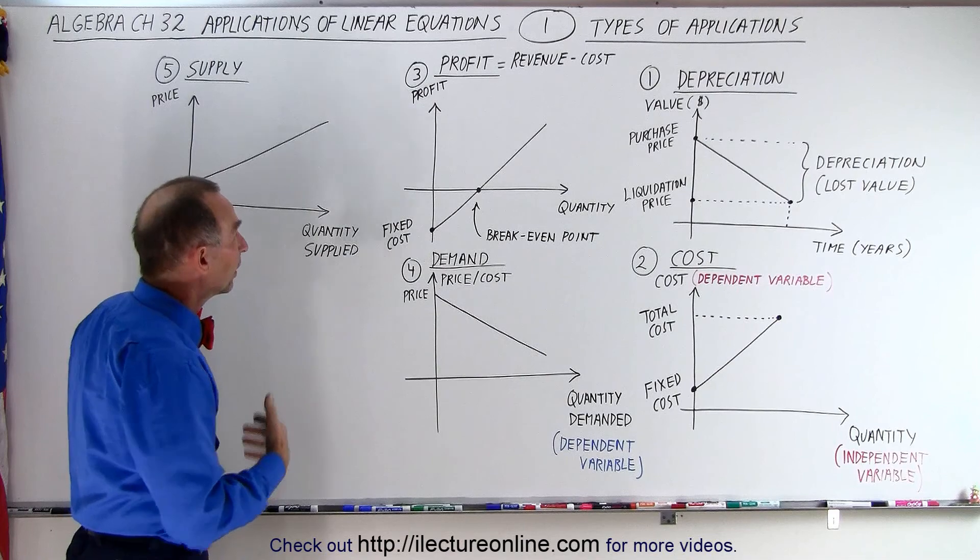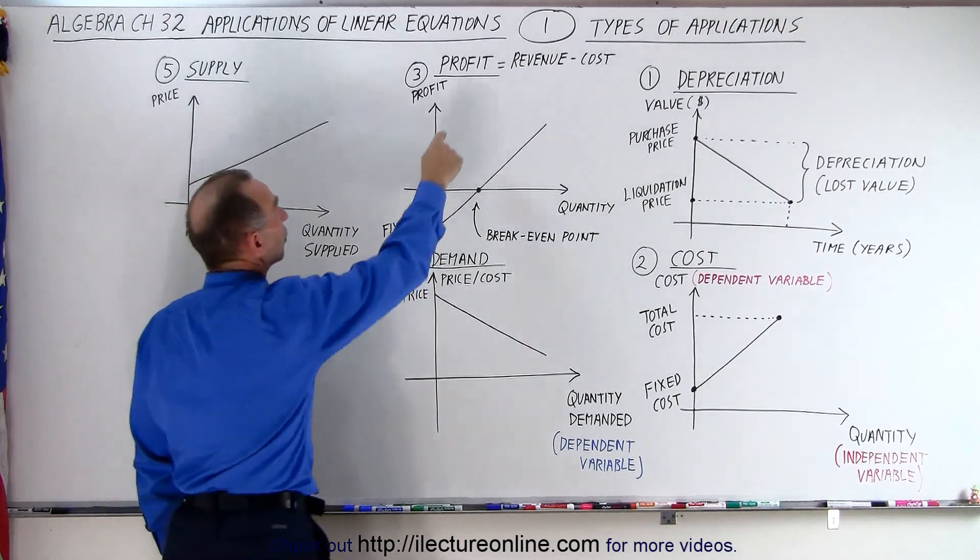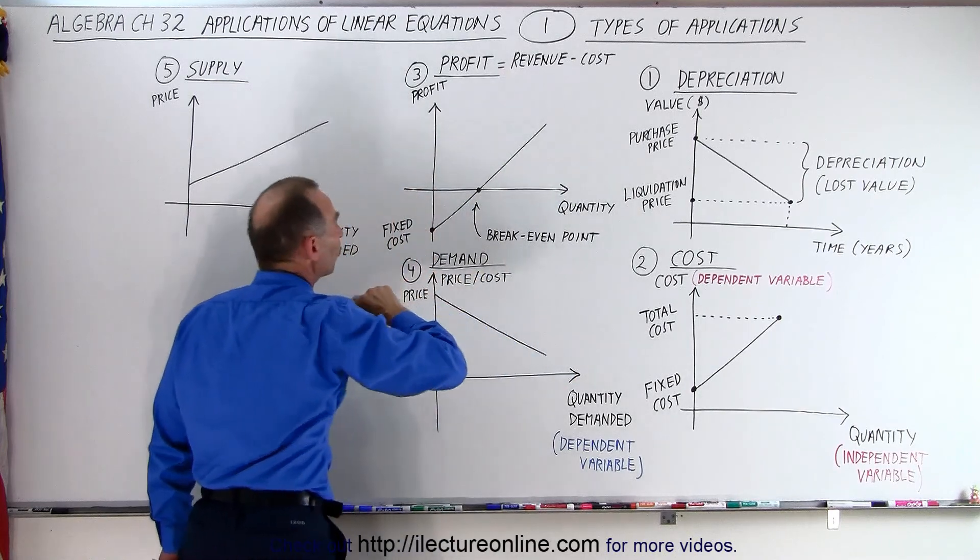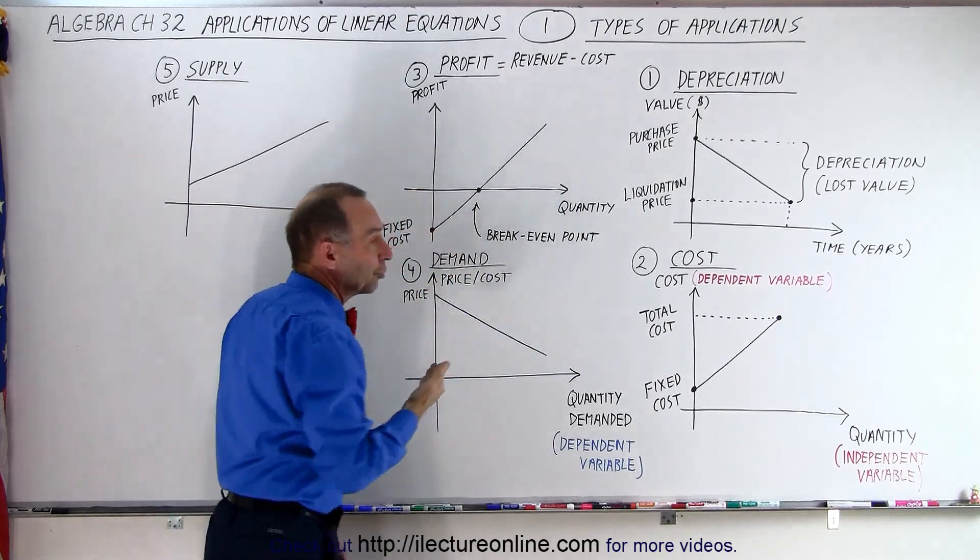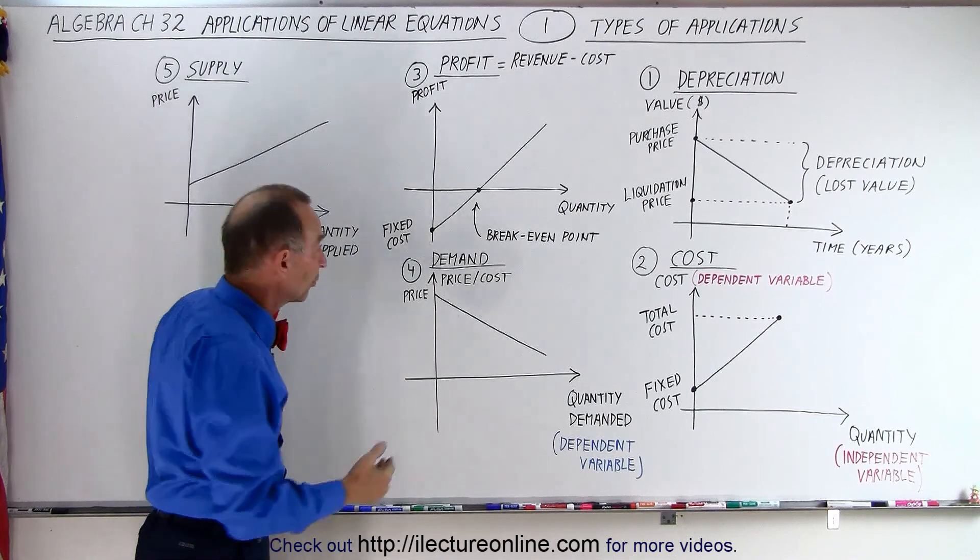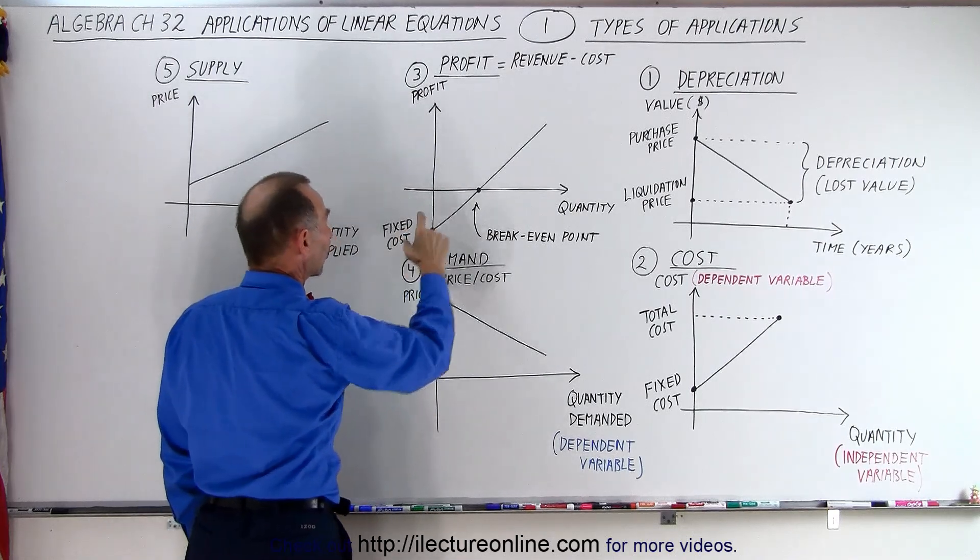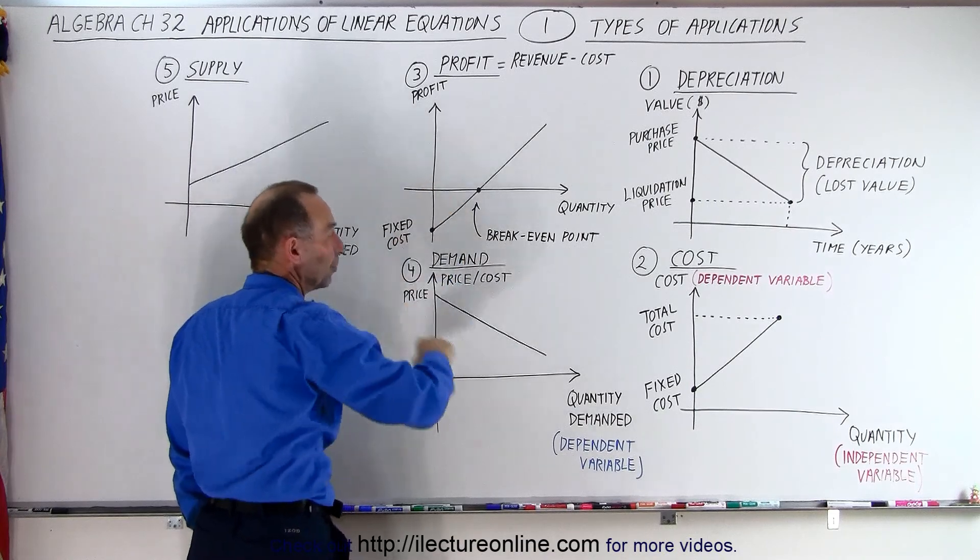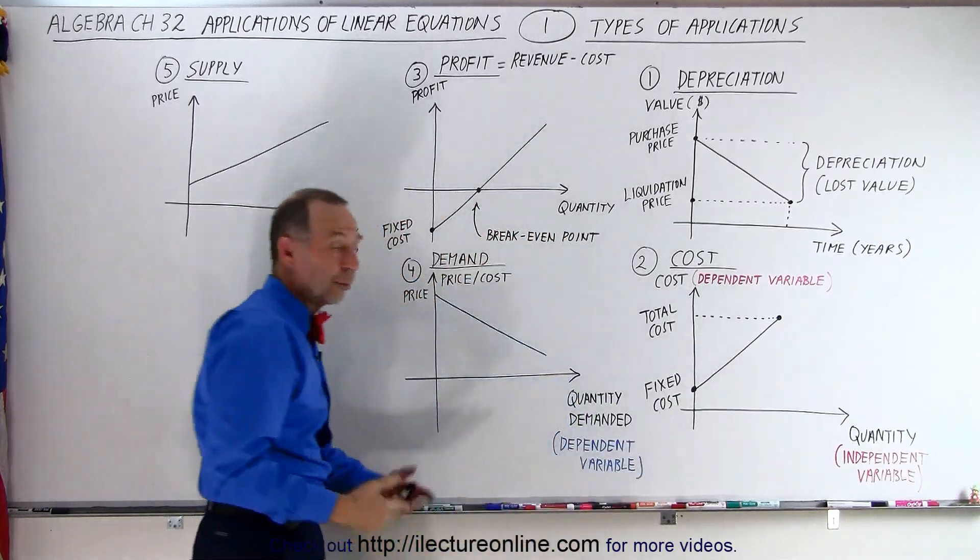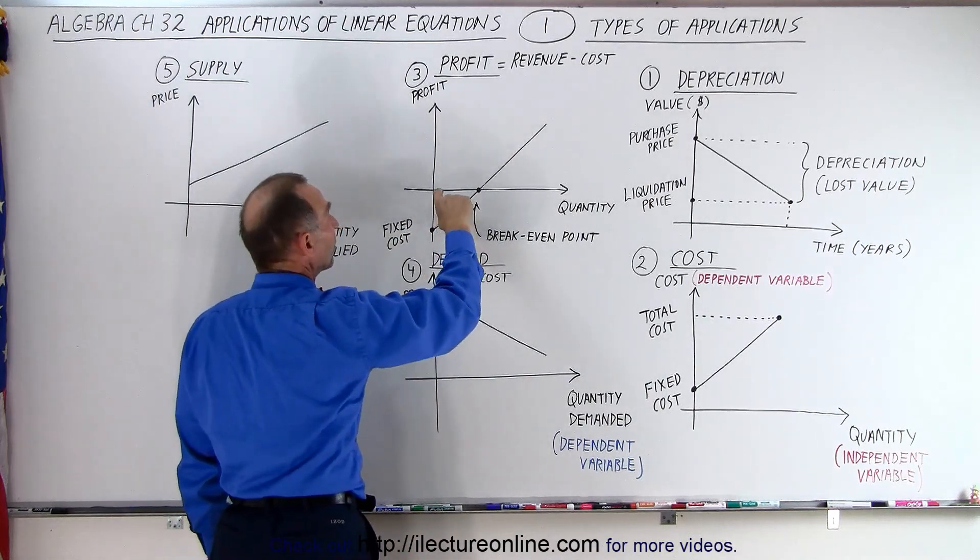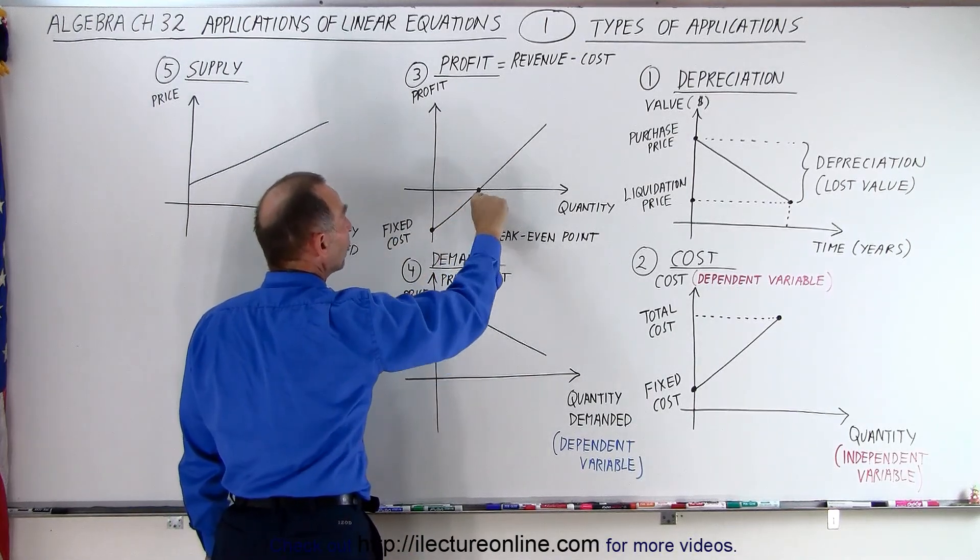The third type of application is called the profit equation. Now the profit is equal to the revenue minus the cost. And so you can see that if you're selling hamburgers, you're going to get a certain amount of money when you sell the hamburgers. But of course, when you don't sell any hamburgers, your profit is negative because it costs you a certain amount of money, the fixed cost, to run your place. Once you start selling hamburgers, you begin to make money off of each hamburger.